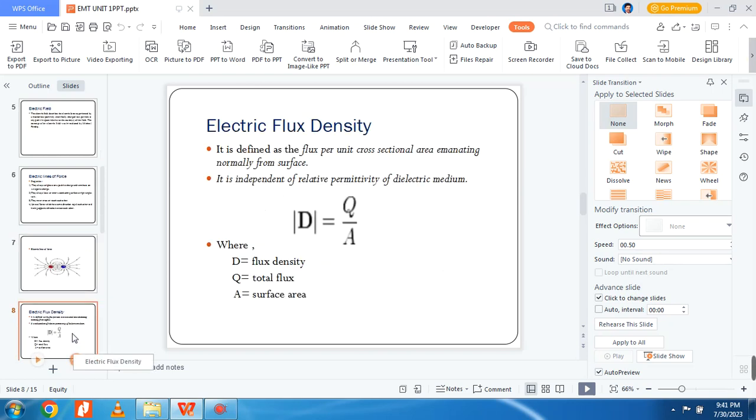Then, electric flux density. It is defined as the flux per unit cross-sectional area emanating normally from surface. It depends upon the relative permittivity of the dielectric medium. D equals Q divided by A, where D is flux density, Q is total flux, and A is the surface area.